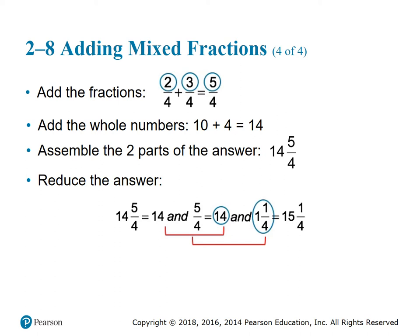We notice the numerator is bigger than the denominator in 5/4, so we set the 14 aside and deal with 5 over 4. Divide 4 into 5: it goes one time with a remainder of 1, giving us the fraction 1/4. That 1 becomes a whole number added to 14, so 14 plus 1 gives 15. Reassemble for a final answer of 15 and 1/4.